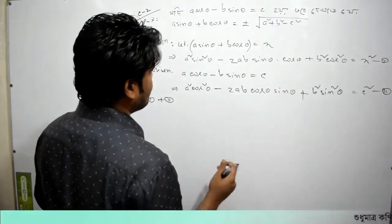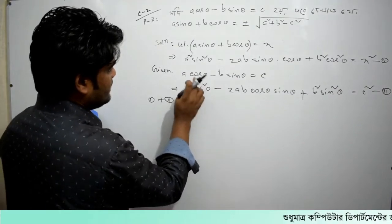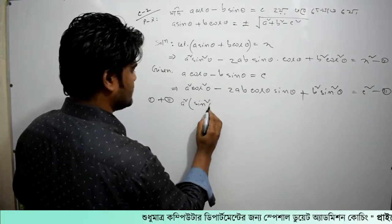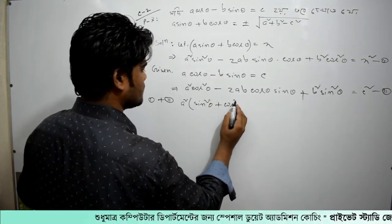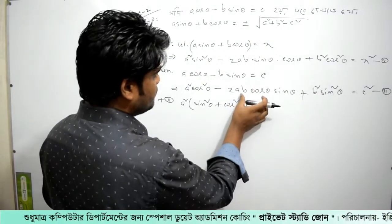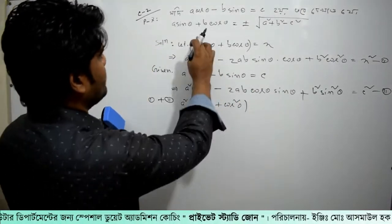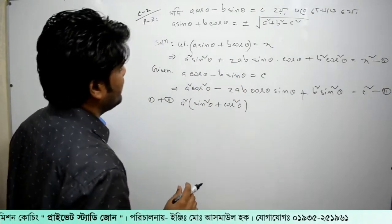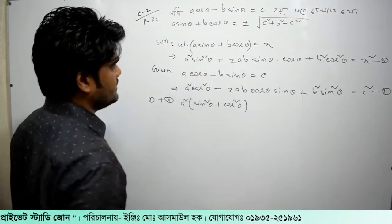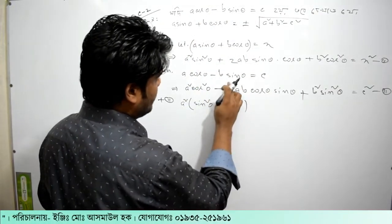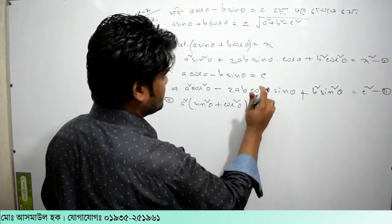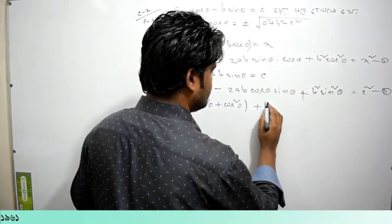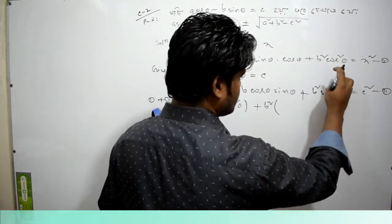When we add equation 1 and equation 2, term by term — here we have b² terms. If sin²θ and cos²θ are inside, they combine. The minus terms: minus 2ab sinθ cosθ and minus 2ab cosθ sinθ cancel out. So sin²θ plus cos²θ remains.